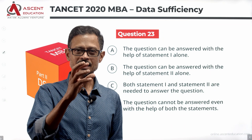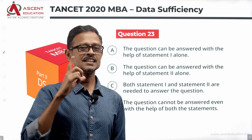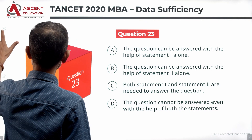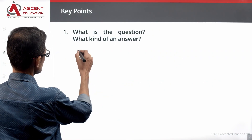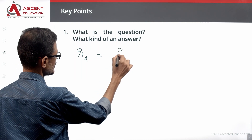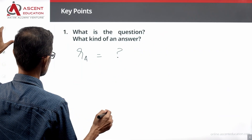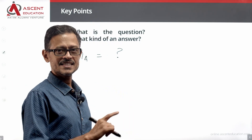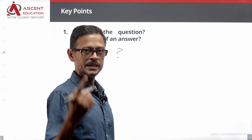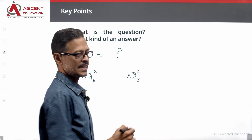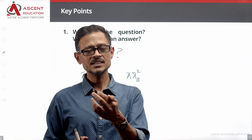How can we make sense of this and determine data sufficiency? Let's start evaluating statements 1 and 2, one by one. The question is: what is the radius of circle A, which we'll call Ra? Using the circle area formula pi r squared, the area of circle A is pi × Ra² and the area of circle B is pi × Rb².